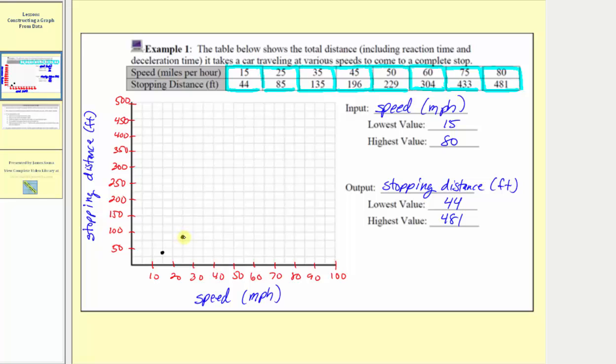We can't be extremely precise. We just do the best we can when plotting these points based upon the scaling of the axes. Next we have 35 comma 135, so here's the input of 35. Output of 135 would be approximately here. Next we have 45 comma 196, so right to 45, up to 196, approximately here.